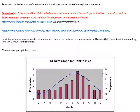Permafrost is a thermal condition of the soil whereby temperatures remain below zero for at least two consecutive winters. It is solely dependent on temperature and time, not on the presence of water.